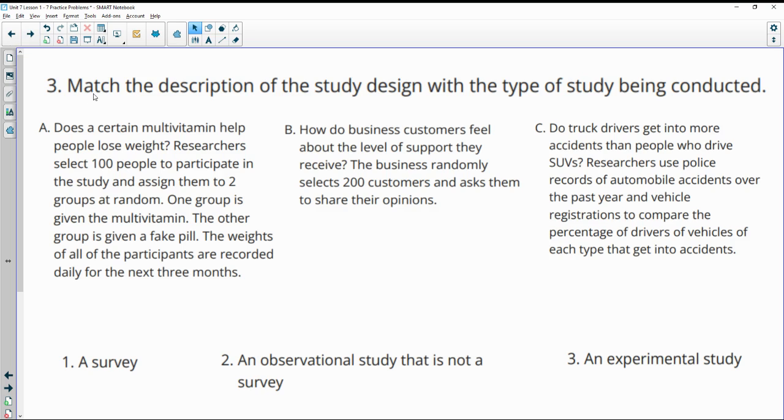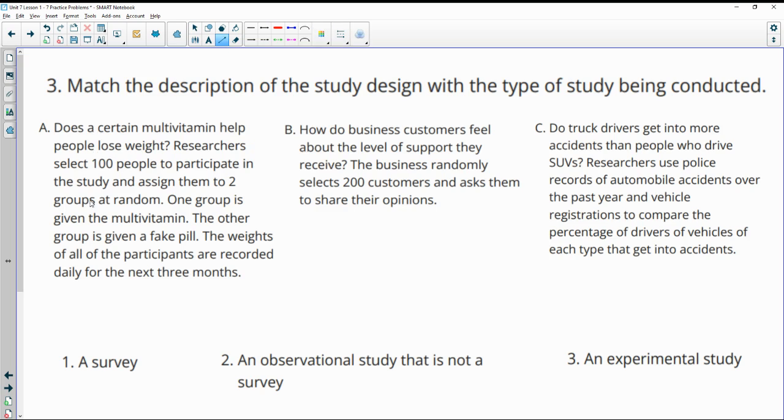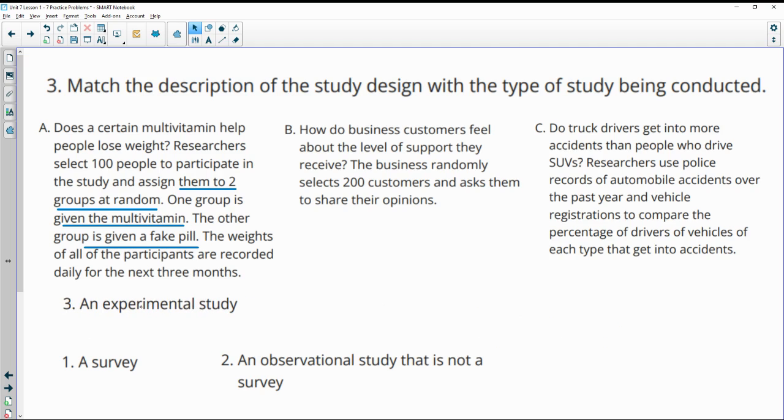Number three, match the description of the study design with the type of study being collected or conducted. Part A says, does a certain multivitamin help people lose weight? Researchers select 100 people to participate in a study and assign them to two groups at random. One group is given a multivitamin, the other is given a fake pill. So this is influencing what's happening to see if it matters. So that's an experimental study.